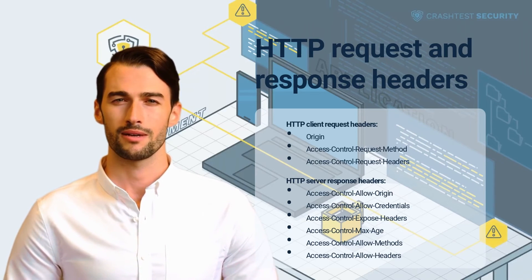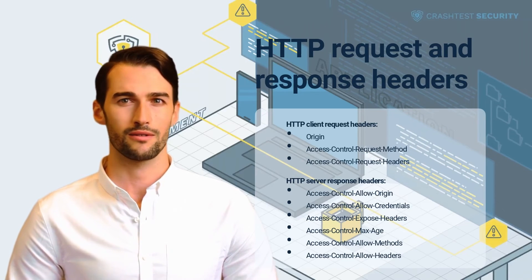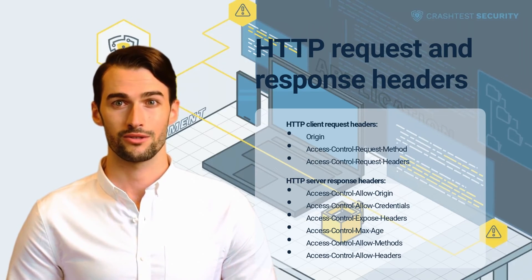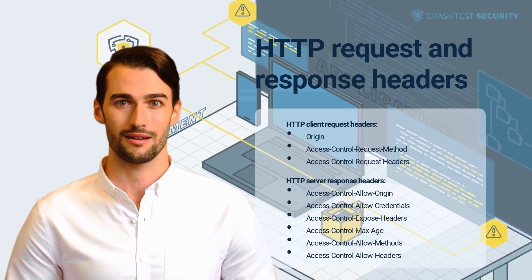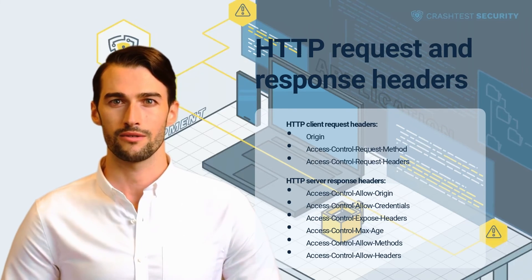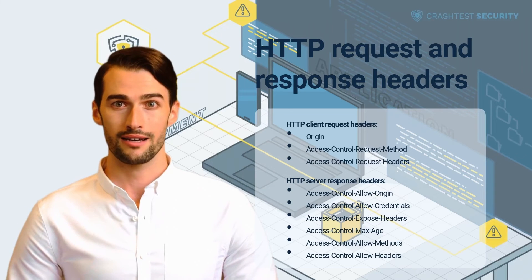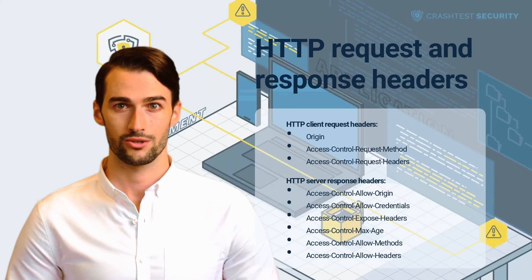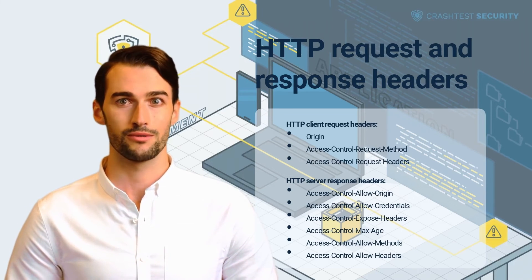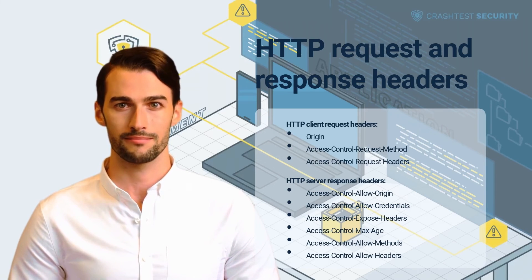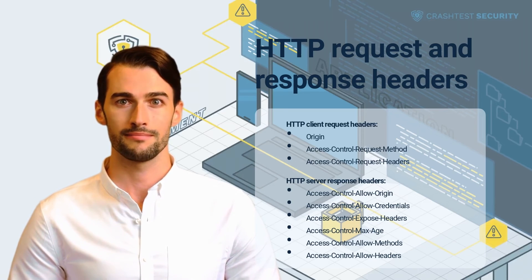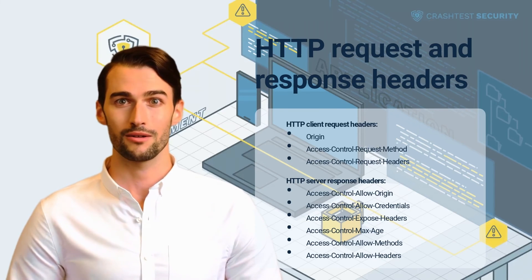These include the HTTP client request headers, such as Origin, Access-Control-Request-Method, and Access-Control-Request-Headers, and the HTTP server response headers, such as Access-Control-Allow-Origin, Access-Control-Allow-Credentials, Access-Control-Expose-Headers, Access-Control-Max-Age, Access-Control-Allow-Methods, and Access-Control-Allow-Headers.